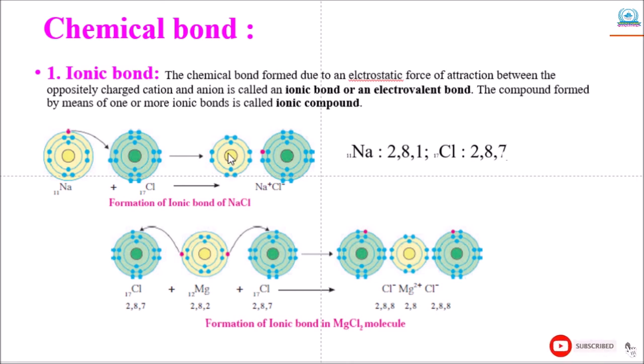Next example is magnesium chloride. Two chlorine atoms share their electrons with magnesium. Here you can see the electronic configuration: chlorine has 2, 8, 7, meaning one electron is required. And again, second chlorine 2, 8, 7, again it requires one electron. They can take both electrons from magnesium which has electronic configuration 2, 8, 2. After sharing these electrons, they form the bond and form the molecule of magnesium chloride.